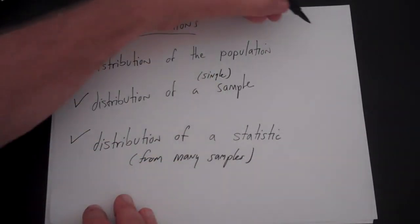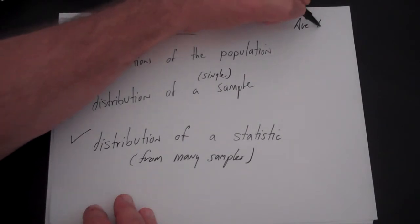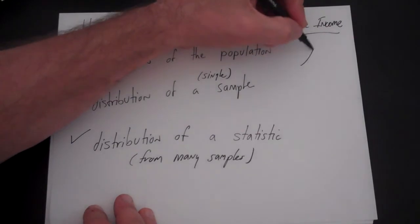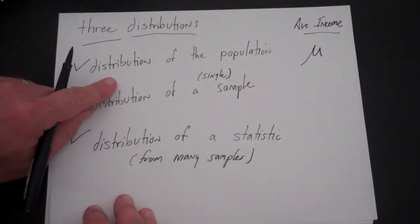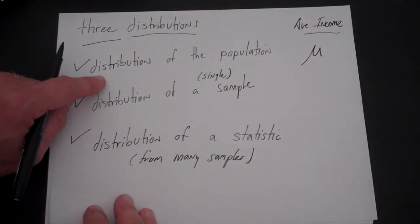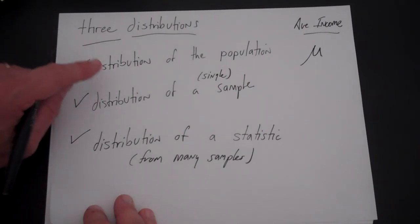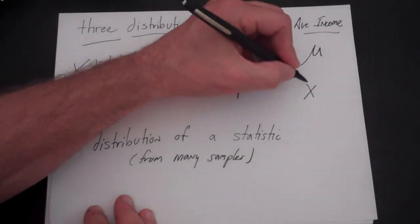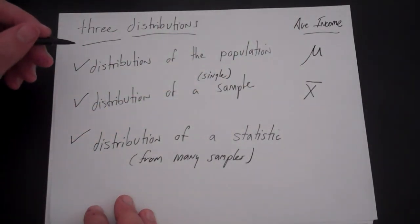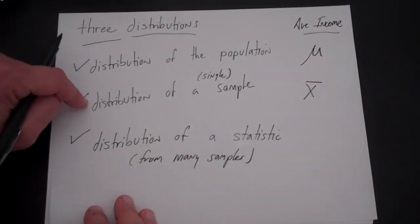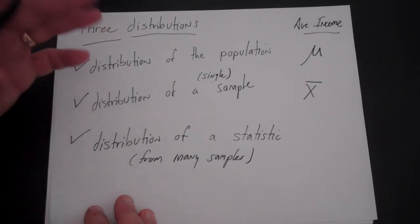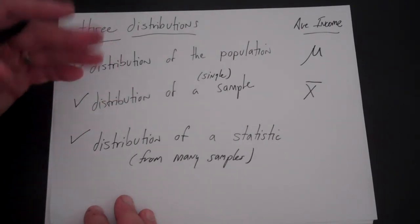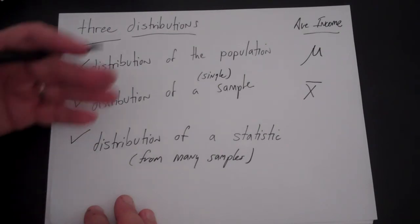A way to think about that is, with average income, there is a mu—an average income in the United States. We might not know exactly what that is, but it exists. Then there's also an x bar for a single sample. You can take a sample of 100 or 200 people, ask them what money they make, and take the average.